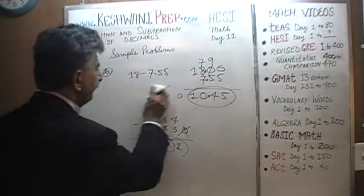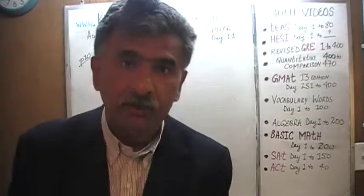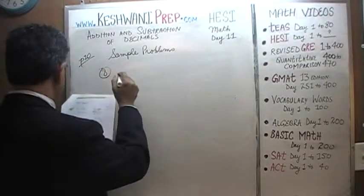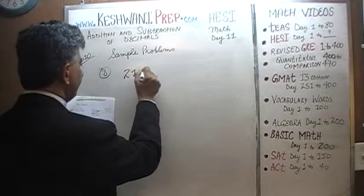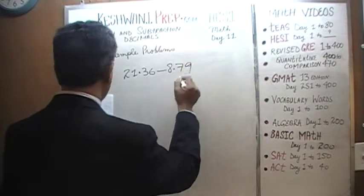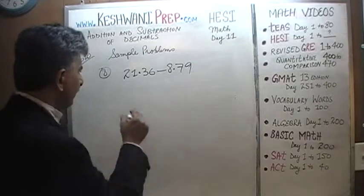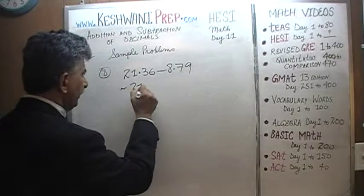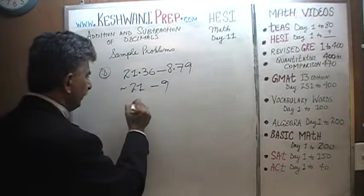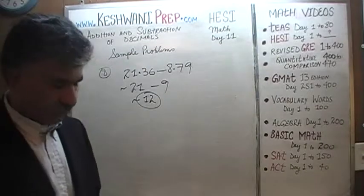Number 8. Never put in any more work than what is absolutely necessary. That should be your motto. Number 8: 21.36 minus 8.79. Now again, before we do any work, let's get an approximation. Had it been a real exam, we would simply say to ourselves that this is approximately 21 minus 9. 21 minus 10 would have been 11, so it's going to be around 12. The correct answer, whatever it is, is going to be around 12.